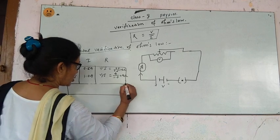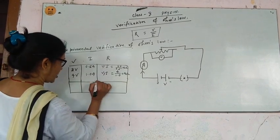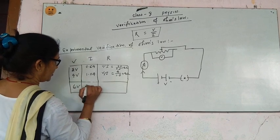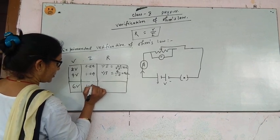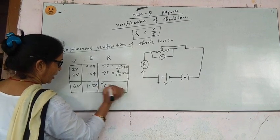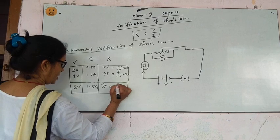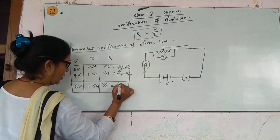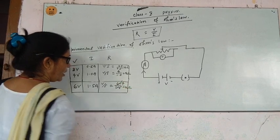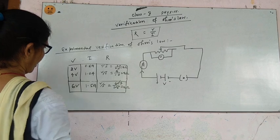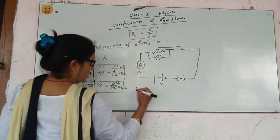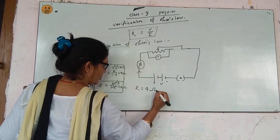At least you can take 3 values. If you take 6 volts and the value of current is 1.5 ampere, then you see that the value of resistance is 6 divided by 1.5, which is 4 ohm. In this condition, you can find that the value of resistance is constant — resistance value is 4 ohm.